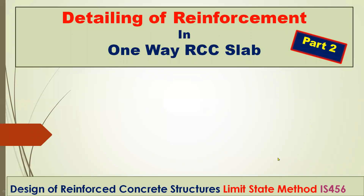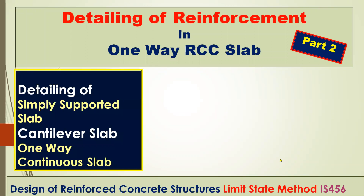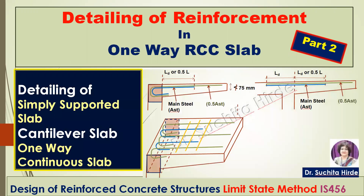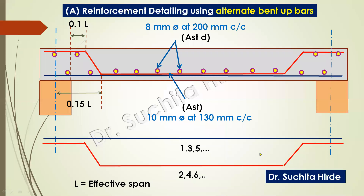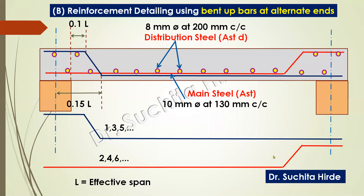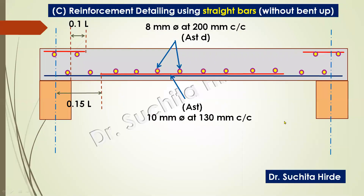Welcome back to this video on detailing of reinforcement in one-way RCC slab, in continuation with Part 1. In this video, you will learn detailing of cantilever slab and one-way continuous slab. In the previous part, I explained detailing of reinforcement for one-way simply supported slab using three different methods: using alternate bent up bars, using bent up bars at alternate ends, and using straight bars without bent up bars.